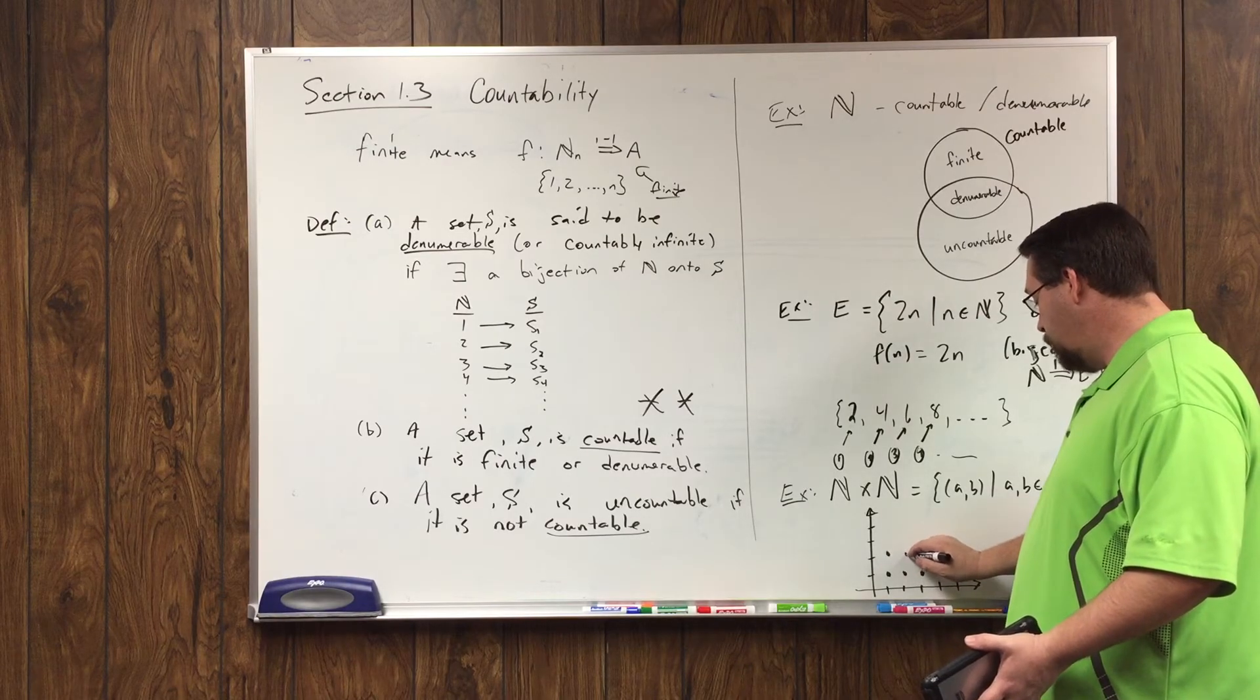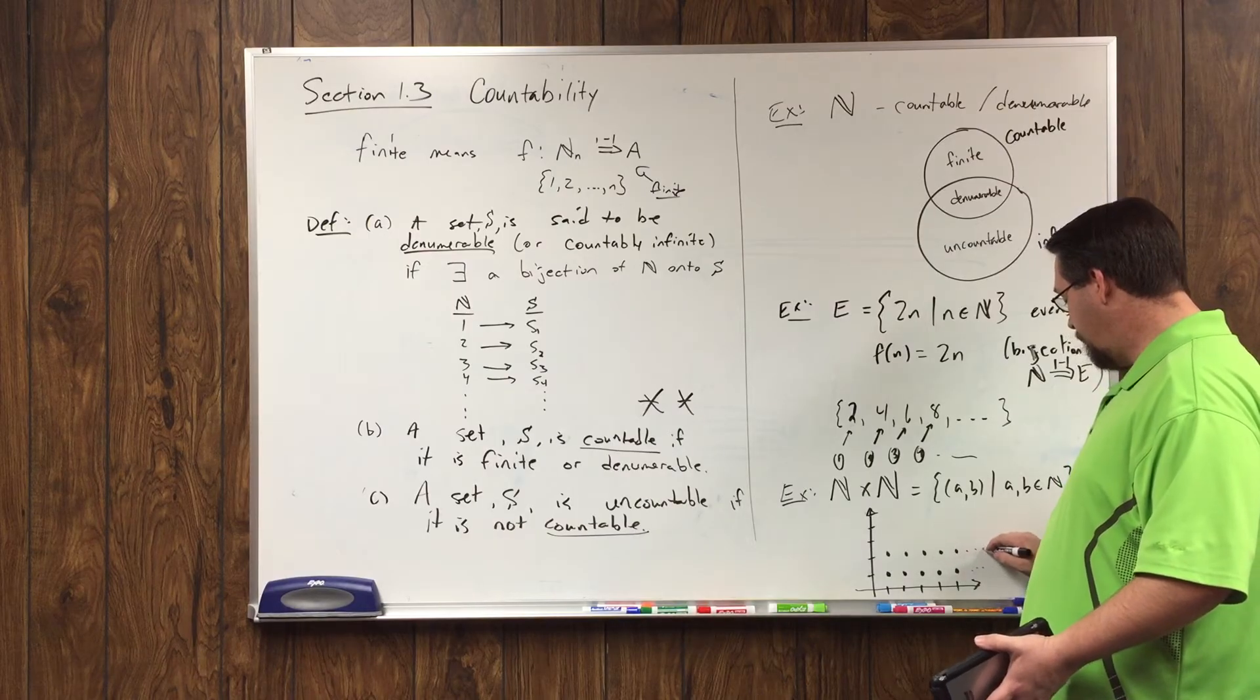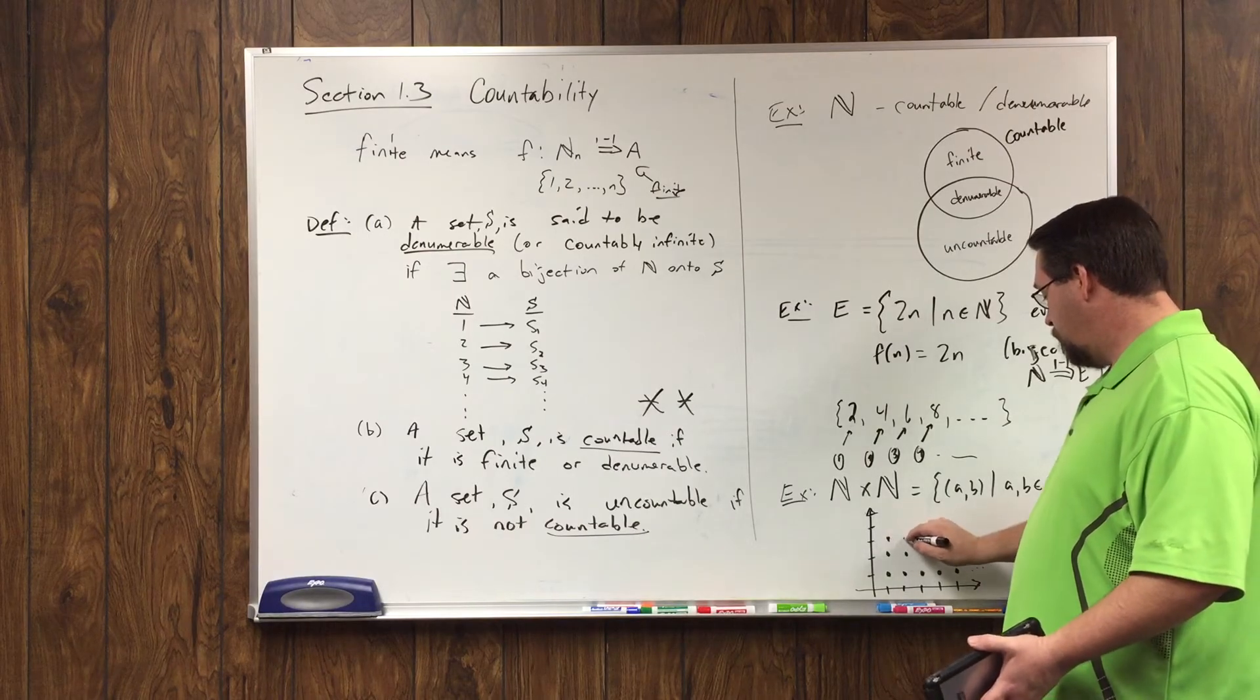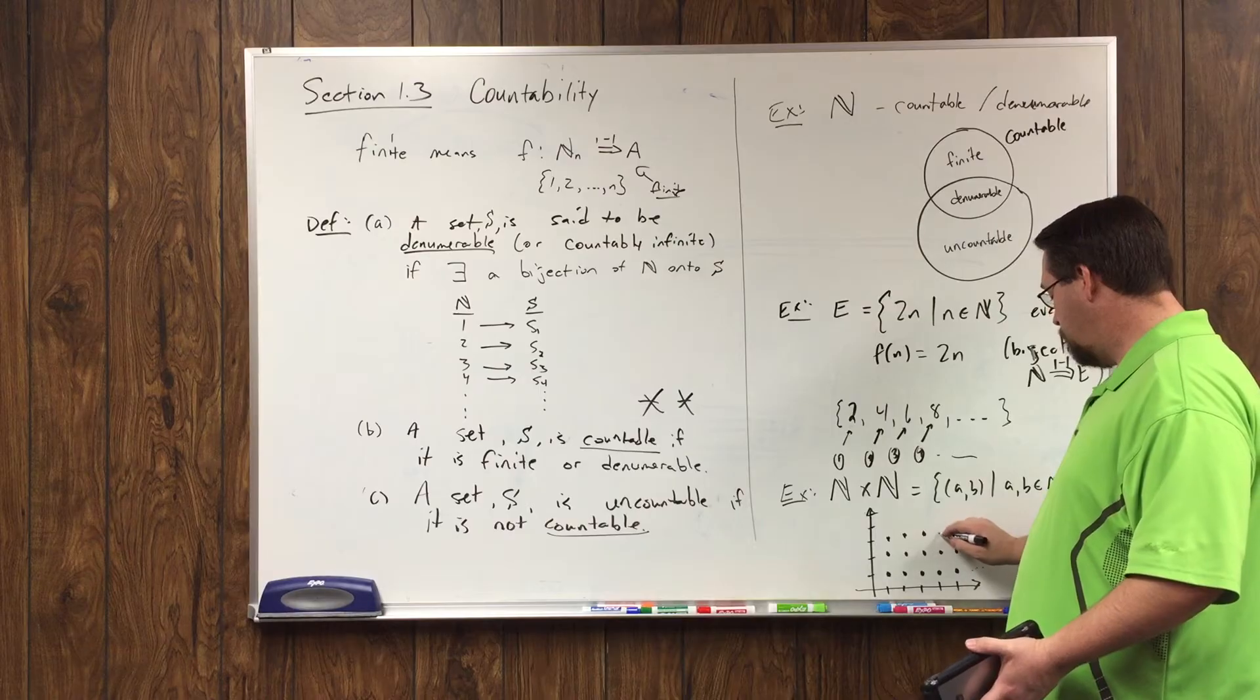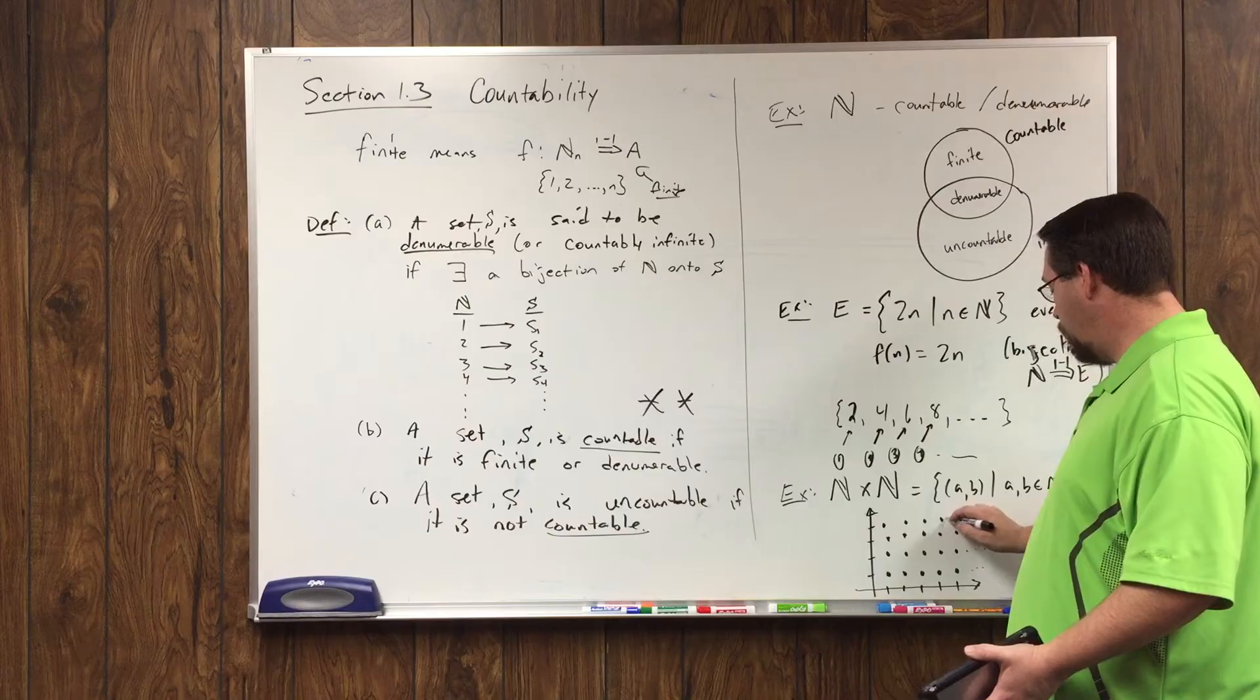Two comma one. Sorry, one comma two. Two, two. Three, two. Four, two. Five, two. I'm going to stop on this row here.